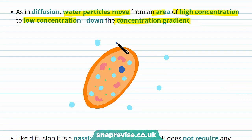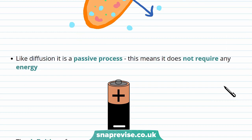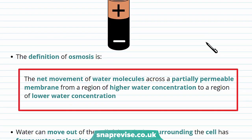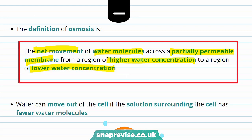So in this case, the water molecules are at a high concentration inside the cell and a low concentration outside the cell, which means that water particles leave the cell down the concentration gradient. Like diffusion, this is a passive process, meaning it doesn't require any energy — it's just a natural movement of water particles from a high to a low concentration. The definition of osmosis is a net movement of water molecules across a partially permeable membrane, from a region of high water concentration to a region of lower water concentration.